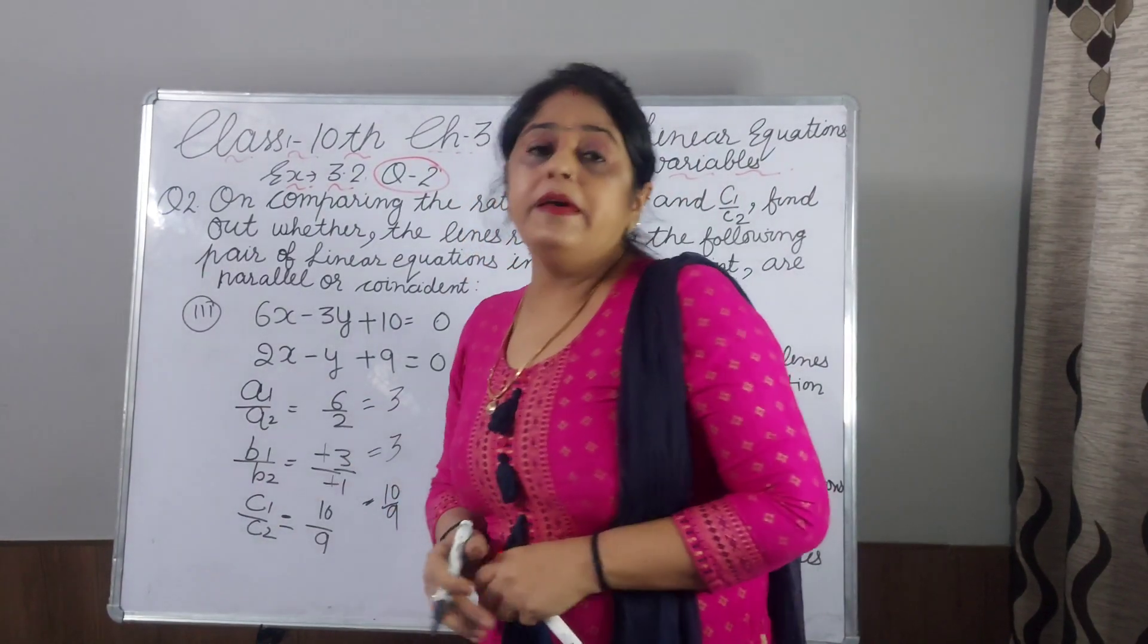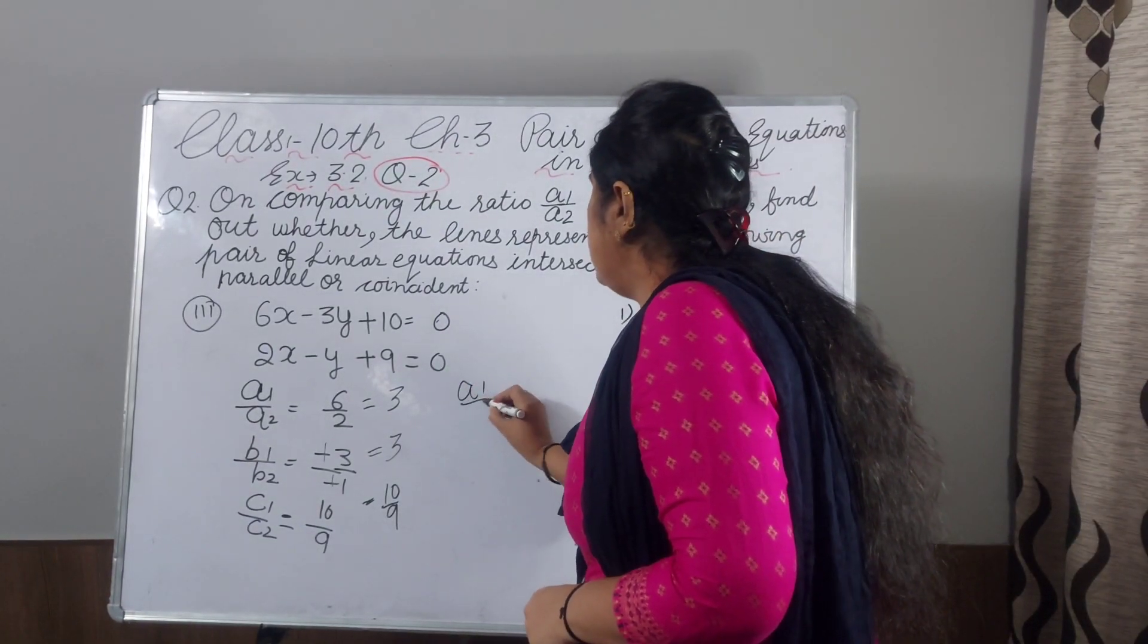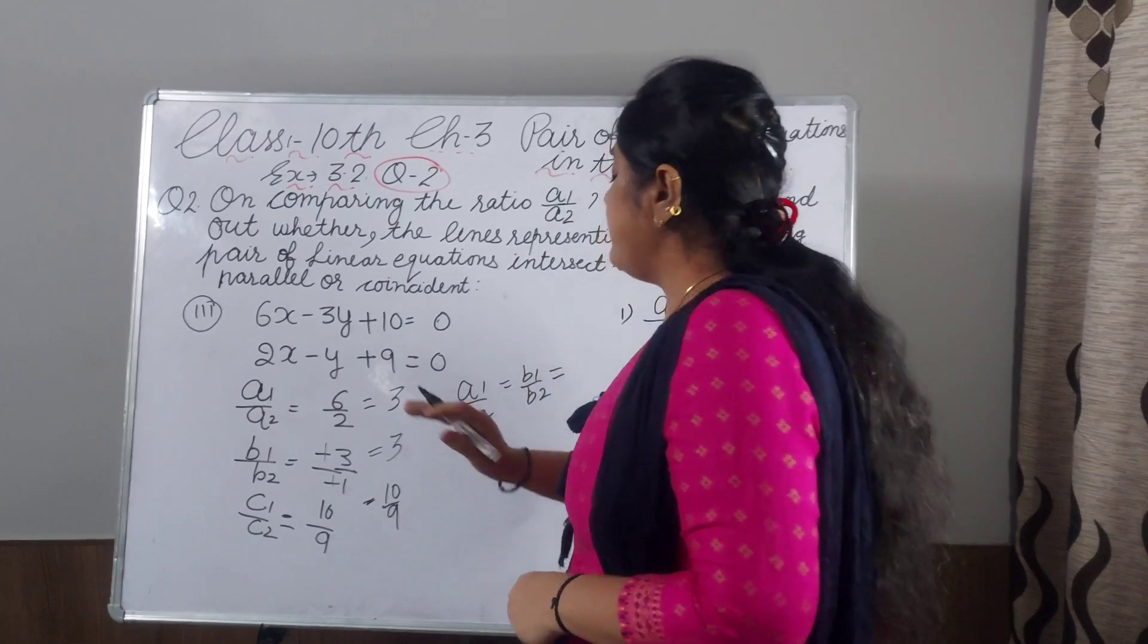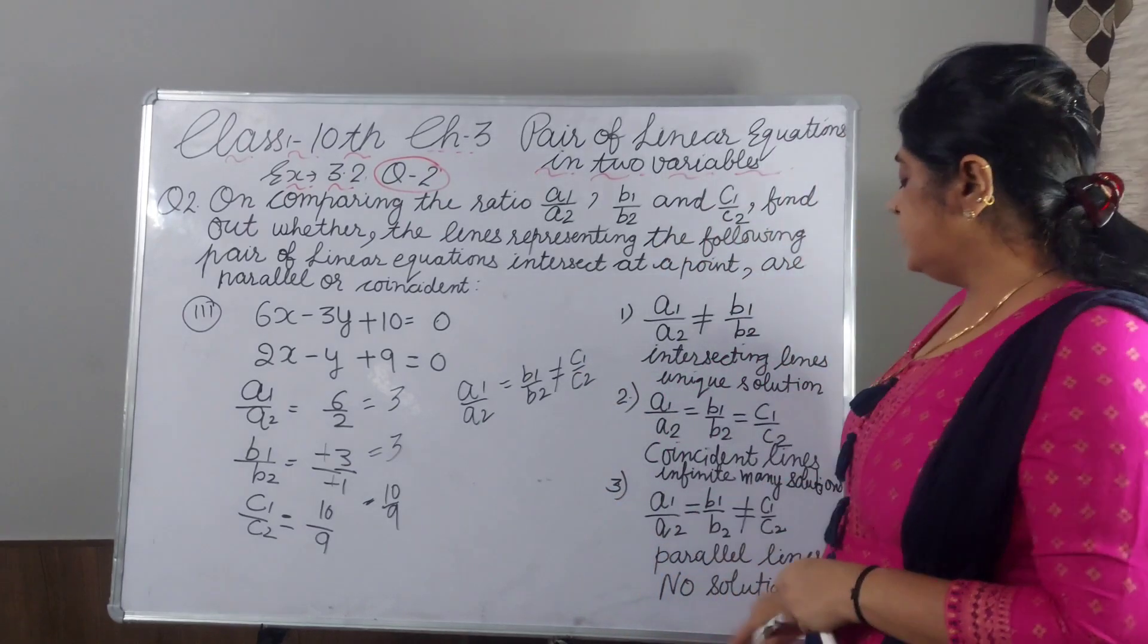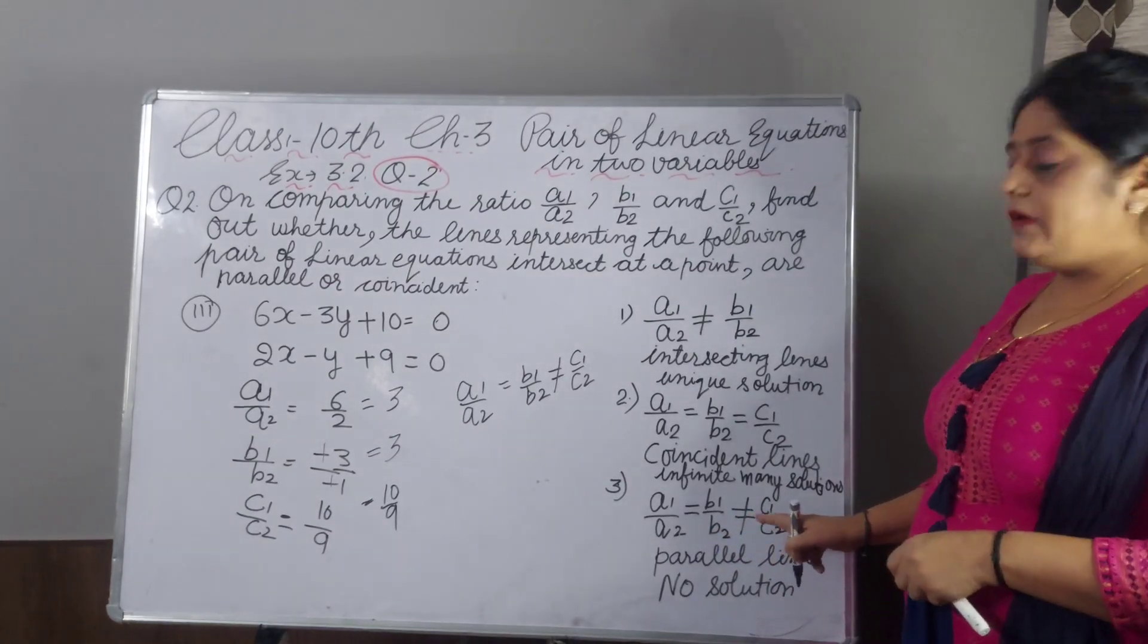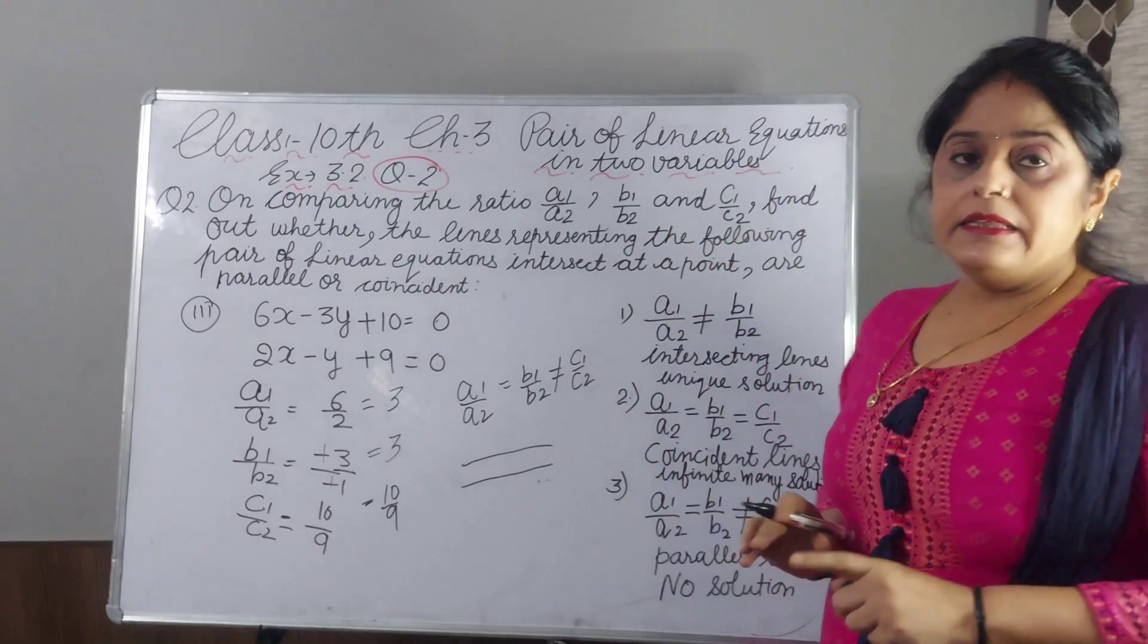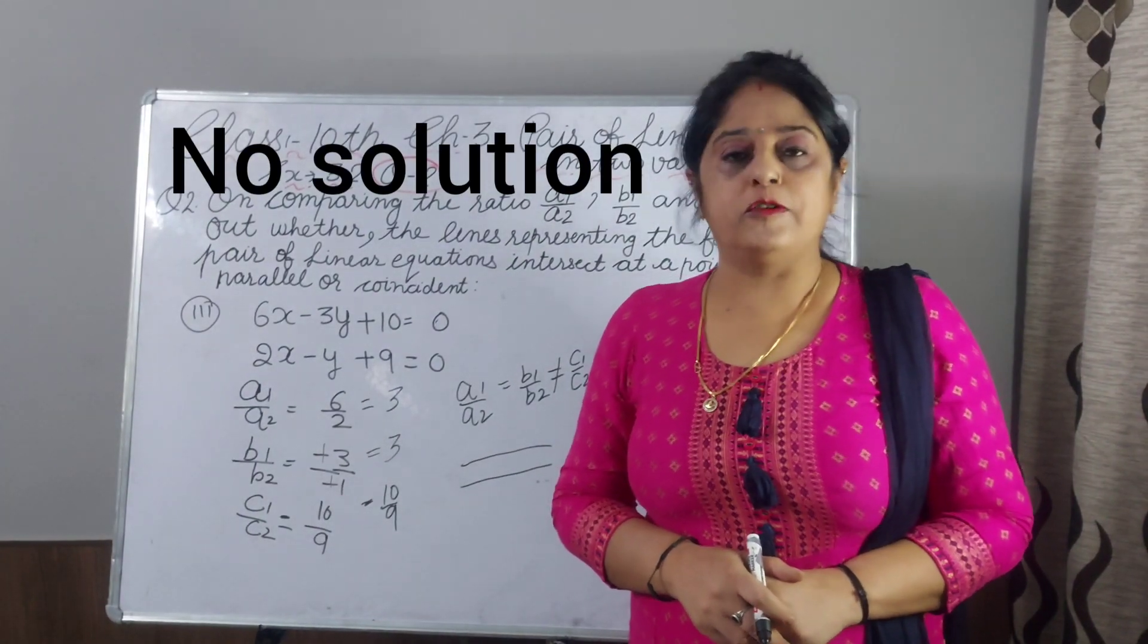When we compare this, A1 by A2, B1 by B2 and C1 by C2, what you get? A1 by A2 is 3 and B1 by B2 is also 3. But C1 by C2 is not equal. You write not equal C1 by C2. Now see the third condition: A1 by A2 equal to B1 by B2, not equal to C1 by C2. So graphically, these lines are parallel lines. Their position are like parallel lines. They will not intersect each other. And we will not get any solution. Means, no solution.